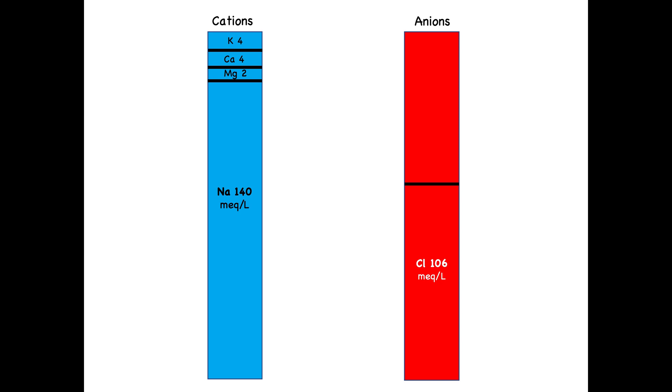On the other side, the main anions are chloride, bicarbonate, and albumin. And again, the unit used here is milliequivalent per liter. It is not gram per liter. In addition, we have other anions that are present in low concentration, such as phosphorus, sulfate, and organic acids.